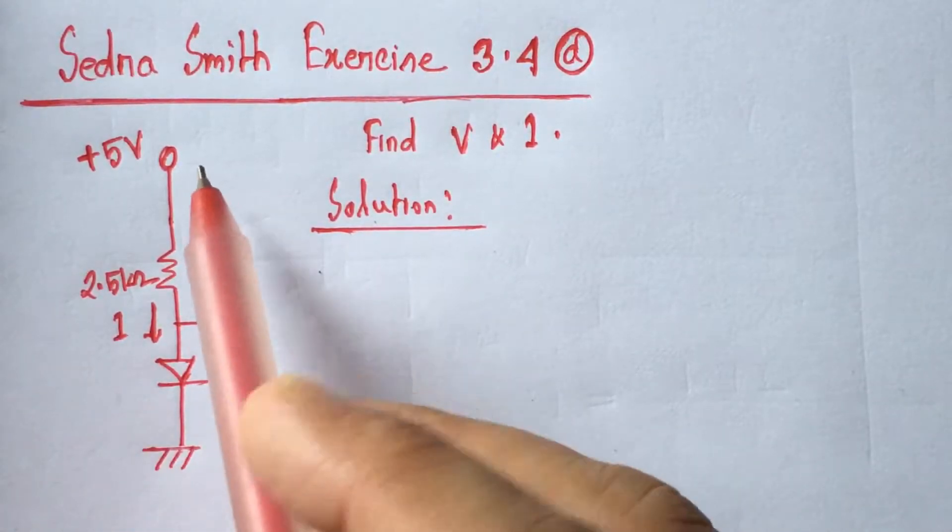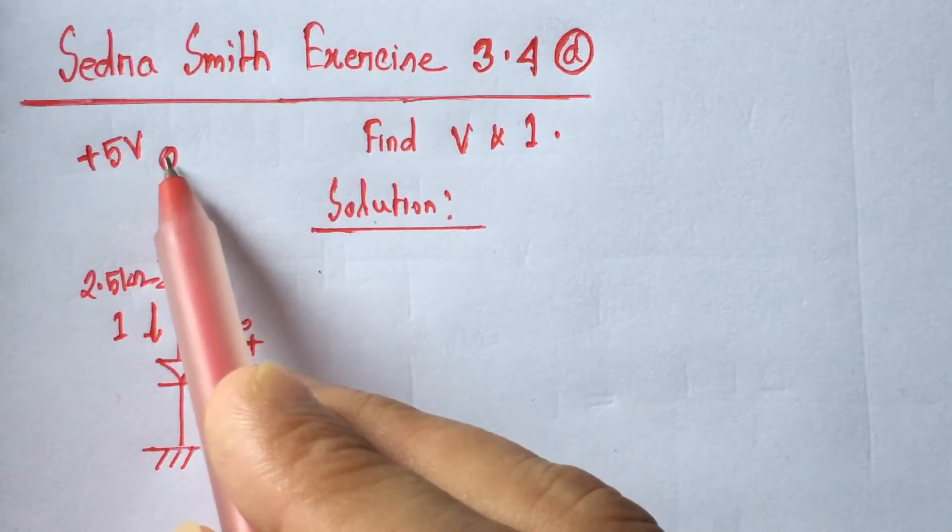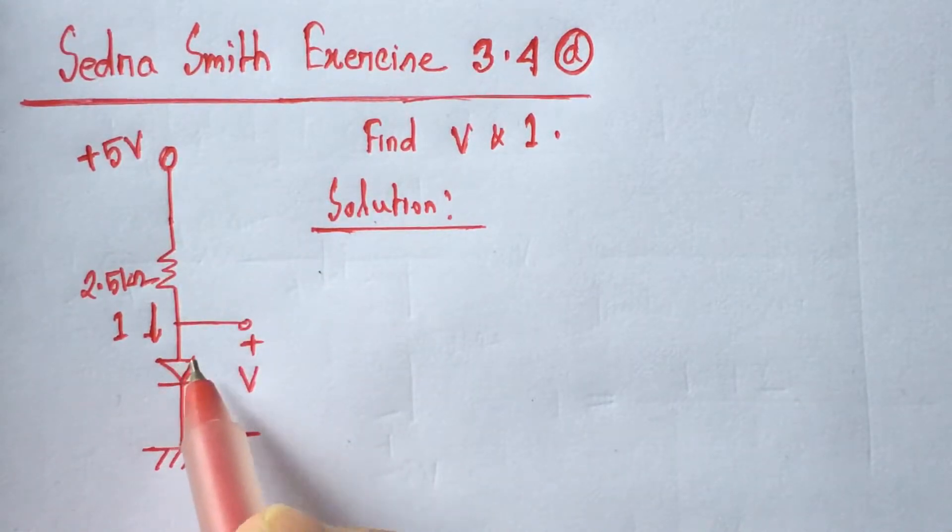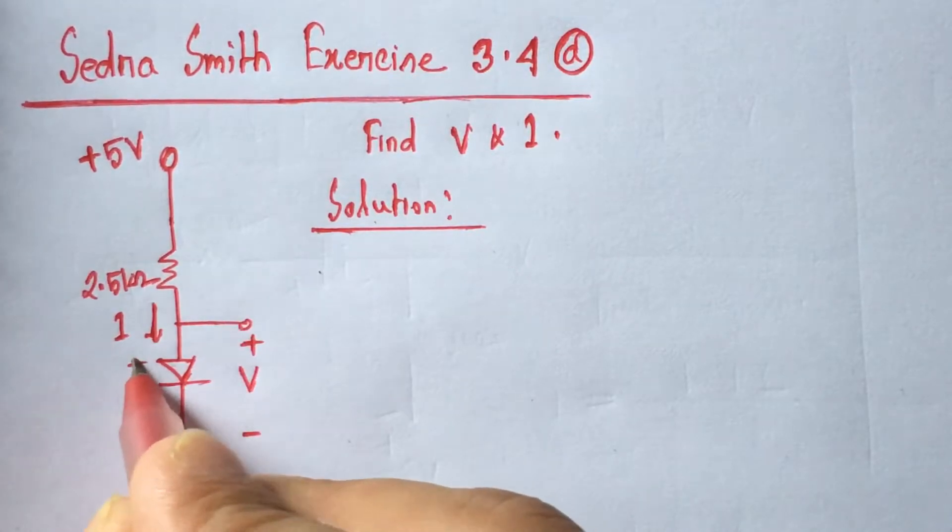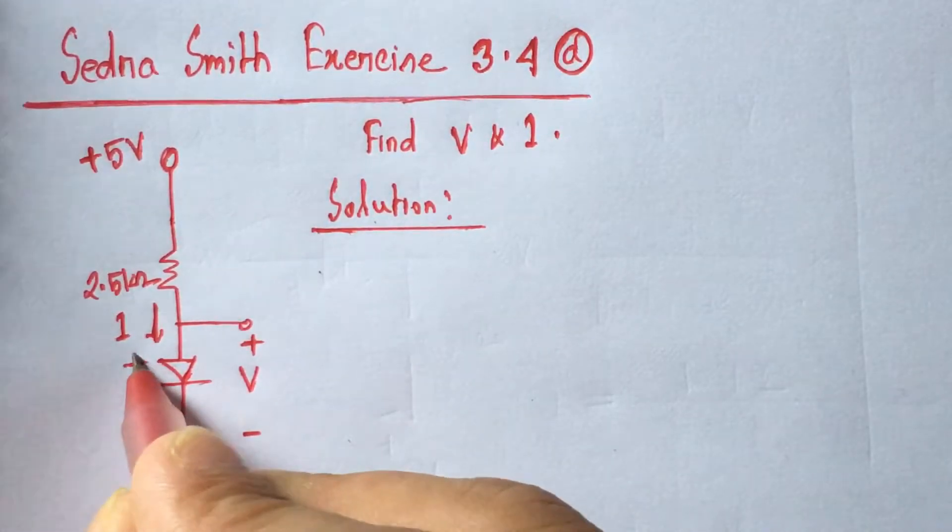From the circuit we see that positive 5 volts is applied across the diode. So this is the positive end of the diode, this is the negative end of the diode.